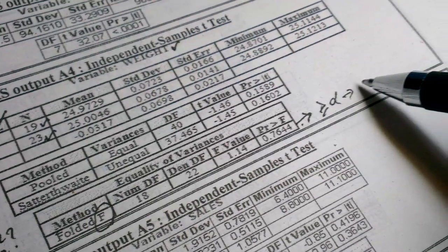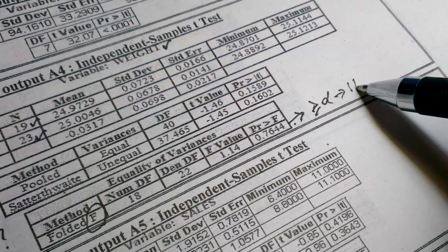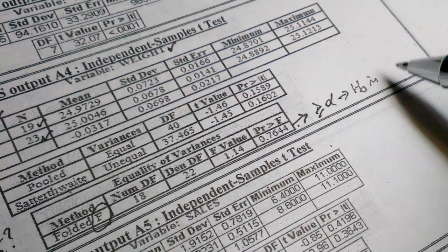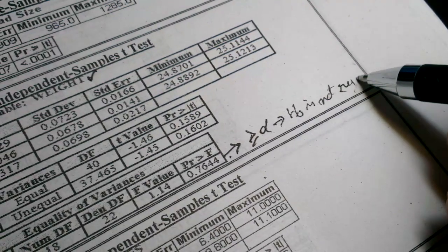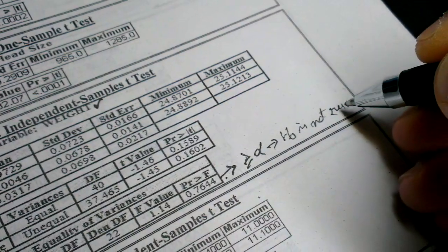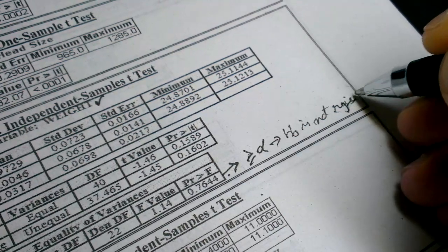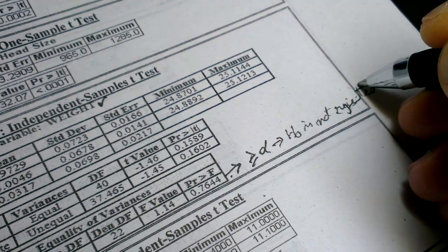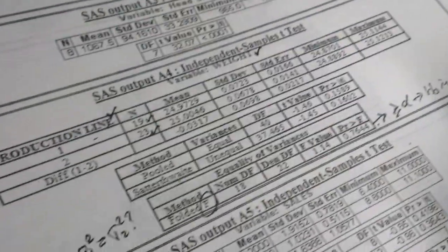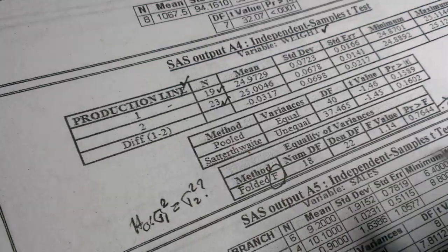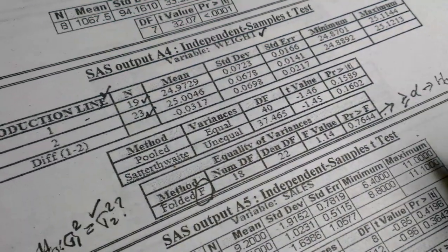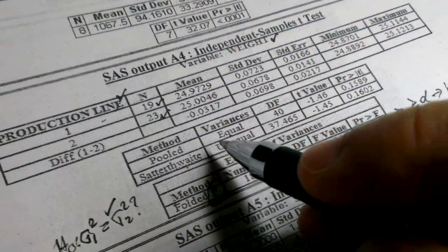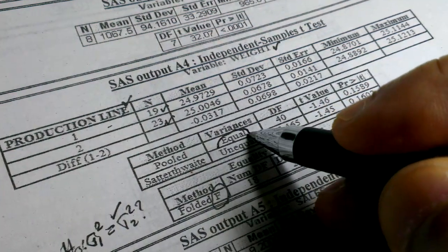So we don't reject H0. H0 is not rejected, therefore we decide that variance is equal. If variance is equal, we have to choose this row.